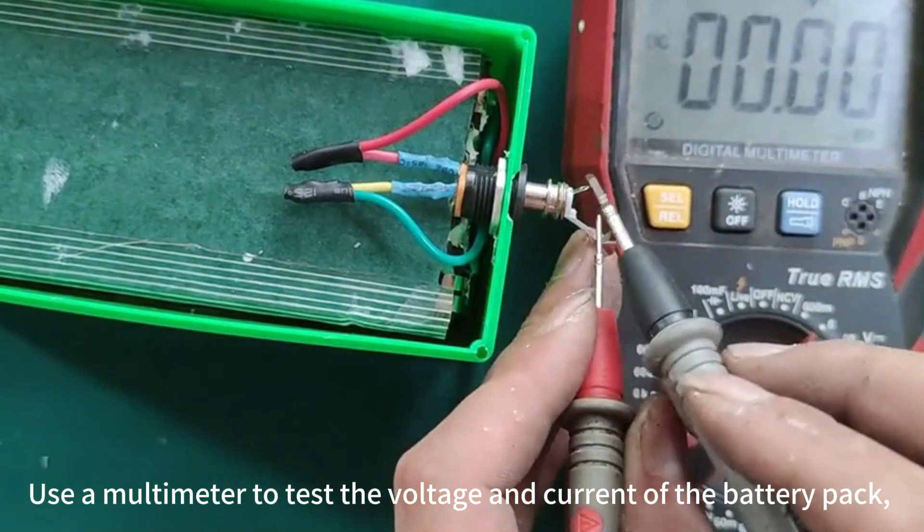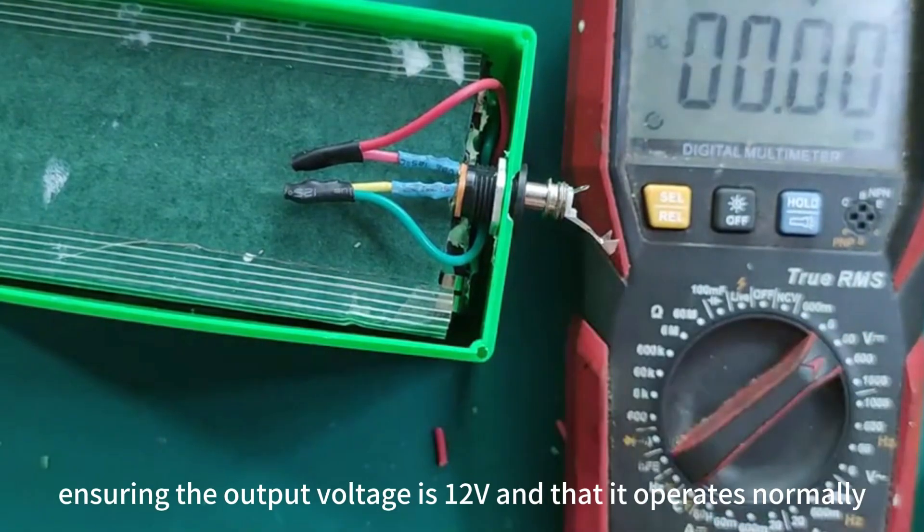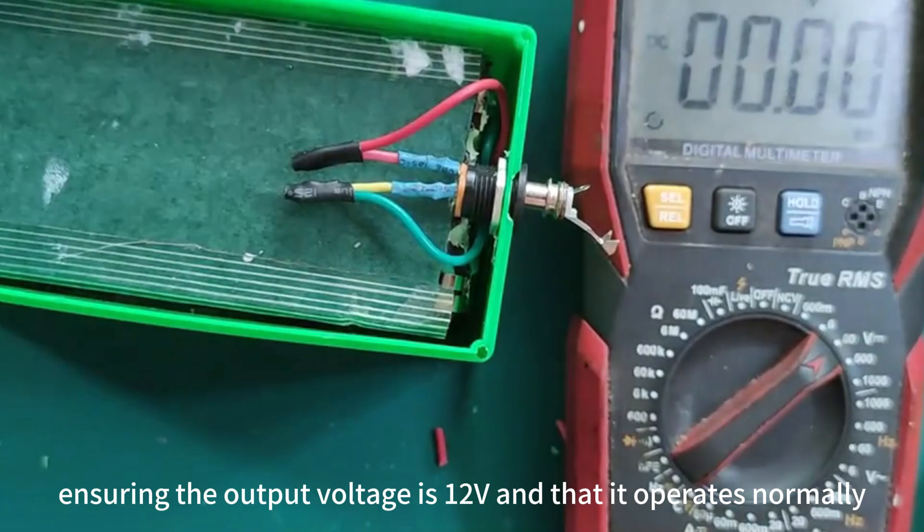Use a multimeter to test the voltage and current of the battery pack, ensuring the output voltage is 12 volts and that it operates normally.